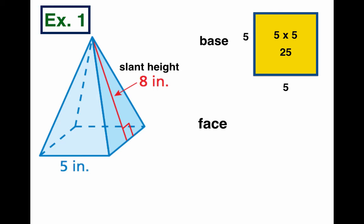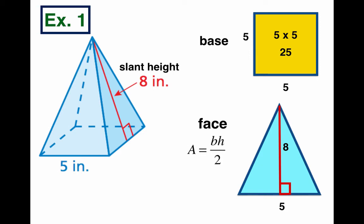So I'm going to draw one of the faces, and the face looks like this - shape of a triangle. What do we know about this triangle? Well, we know that it measures 5 inches on the bottom and it has an 8-inch height. So to find the area of a triangle, we need the triangle formula: base times height divided by 2.